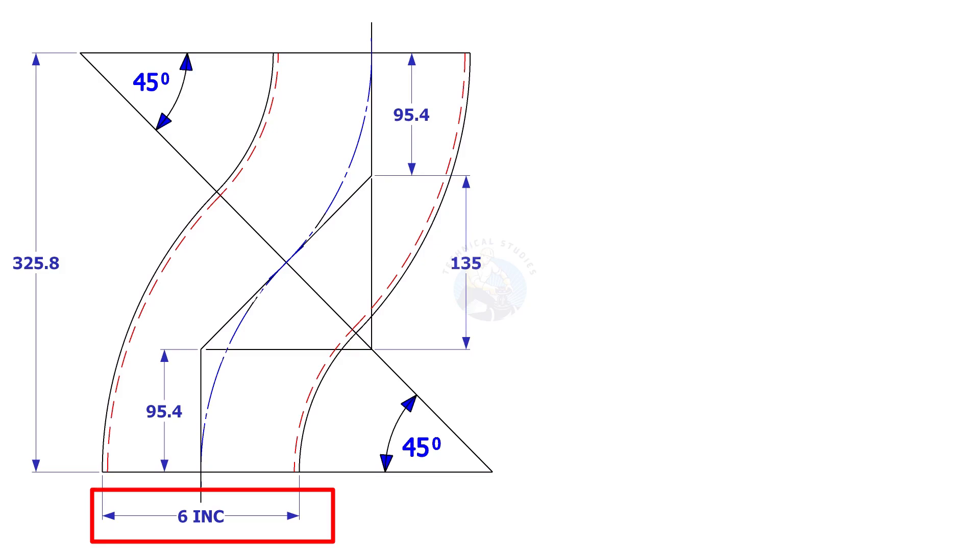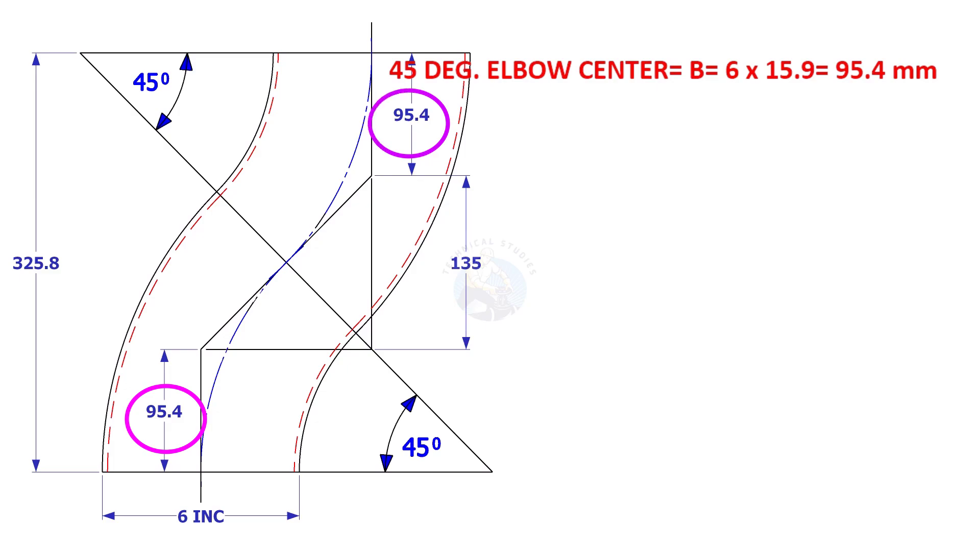In another example, the size of the elbow is 6 inches. A 6-inch 45-degree elbow center is 6 multiplied by 15.9, which is 95.4 millimeters.